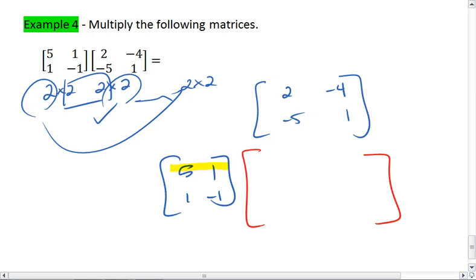Again, first row, first column. Multiply through, we get 10 minus 5, because 2 times 5 is 10, 1 times negative 5 is negative 5.